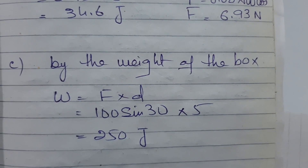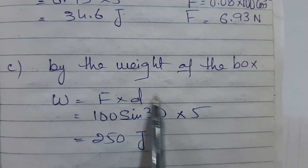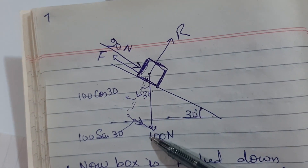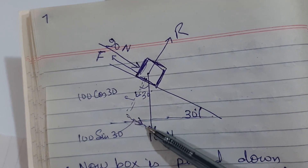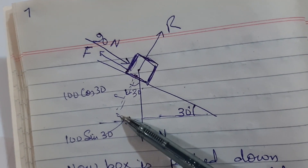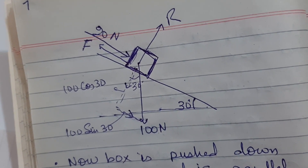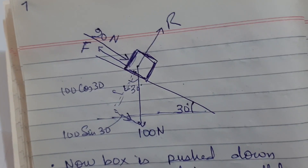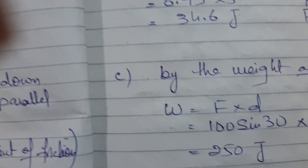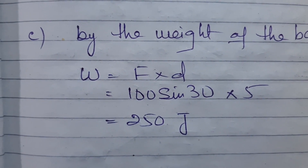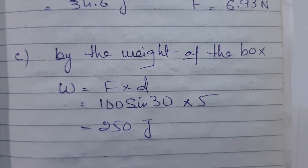For work done by the weight of the box: work done = force × distance, where the relevant force component is the weight component parallel to the plane, which is 100 sin30°. So work done = 100 sin30° × 5 = 250 joules.